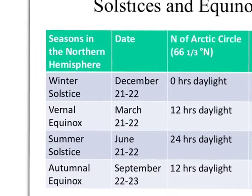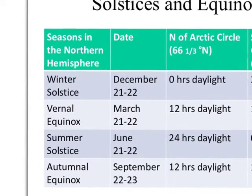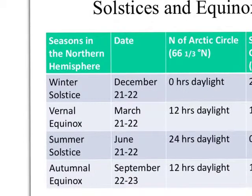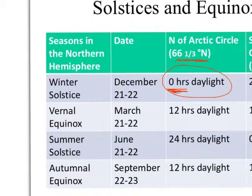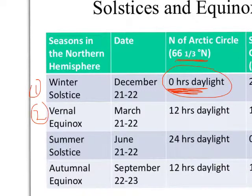I've put together a table showing the four important positions as the Earth orbits the sun. The winter solstice in the northern hemisphere occurs around December 21st–22nd. The line of latitude at 66 and a third degrees north is called the arctic circle — if you are north of the arctic circle, you will have no daylight hours. It's both the indirectness of the sun's rays and the number of hours you see the sun that makes our winter season.